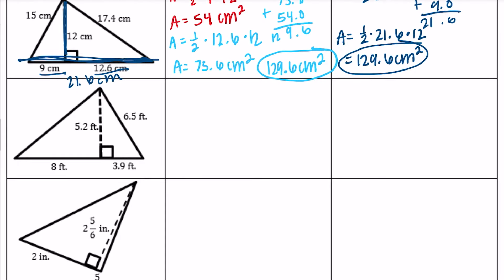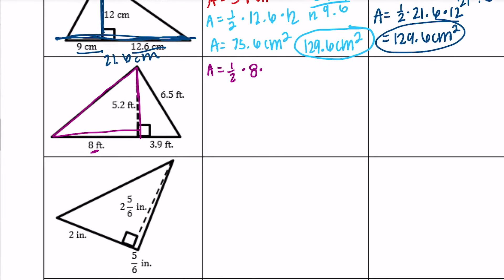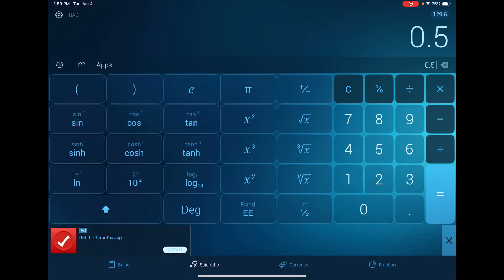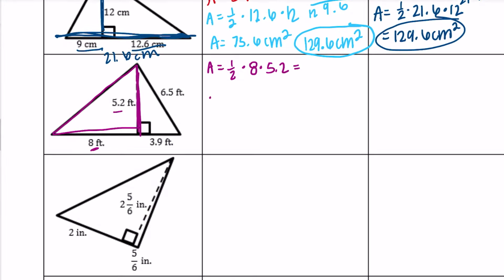On the next example, I'll do the first right triangle. The area equals one-half times the base, which is 8, times the height, which is 5.2. So one-half times 8 times 5.2 gives us 20.8 feet squared.